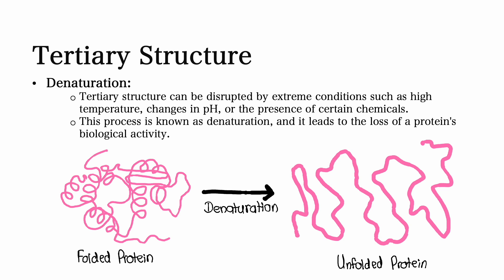Tertiary structures can be disrupted by extreme conditions such as high temperature, changes in pH, or the presence of certain chemicals. This disruption is what is known as denaturation, and it leads to the loss of a protein's biological activity.